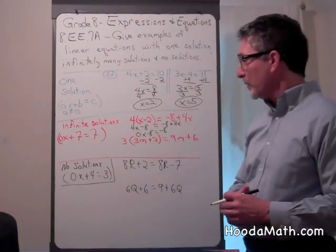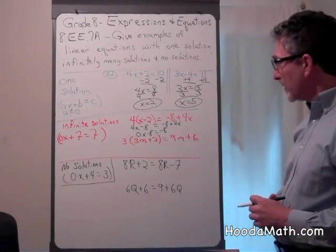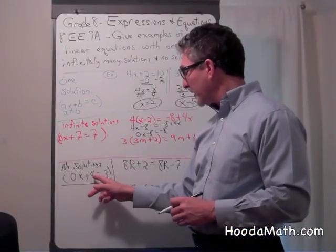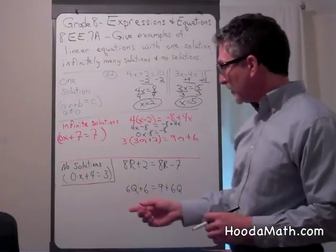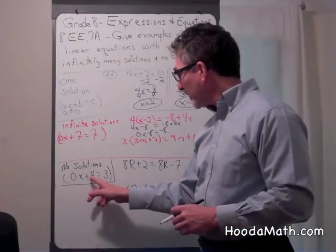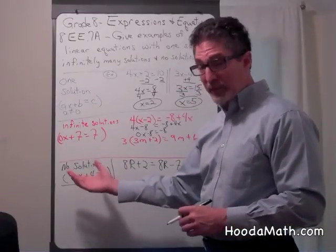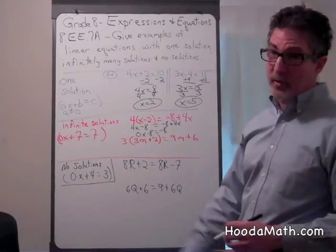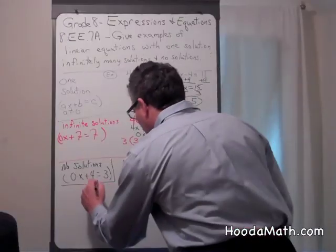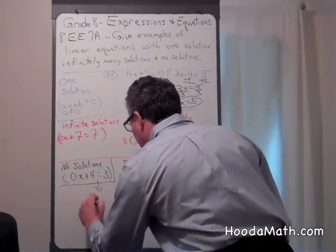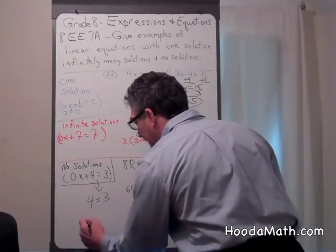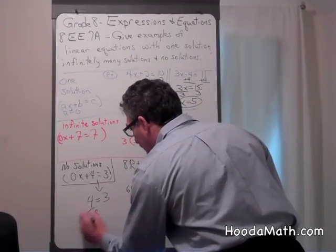And then there's a situation where you have no solutions. No solutions means it doesn't matter what number you use because this is impossible. If you had 0 times x, that would be 0 plus 4 equals 3. 4 cannot equal 3, so there are no solutions. If I brought this down, you'd say 4 equals 3. We know that that is impossible. No solutions.